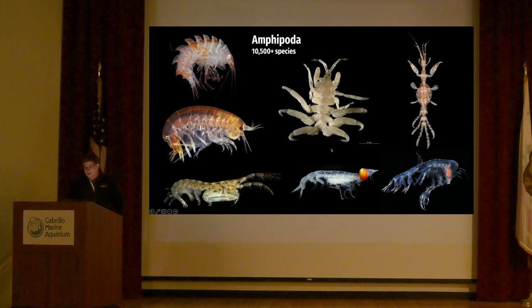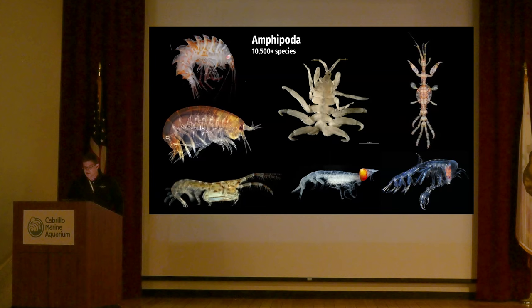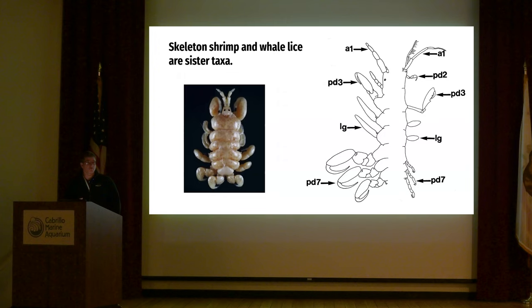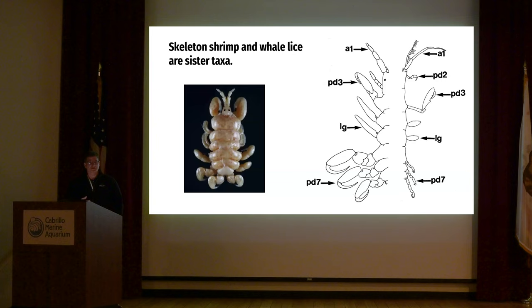There are other amphipods associated with other organisms — salps and other things in the marine environment. You could go on and on with the list of different types of small creatures that don't make the headlines unless people dig into the marine realm. Whale lice are a little more high profile because they're on a gigantic moving island — they're on a very popular group of organisms: the Cetacea, the whales, dolphins, and porpoises.